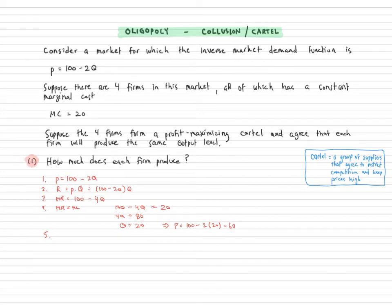But in addition to deciding to be a cartel, the firms also agreed to split the output level equally. So therefore the firm output level is equal to total output divided by 4. So each firm is going to produce 5 units.